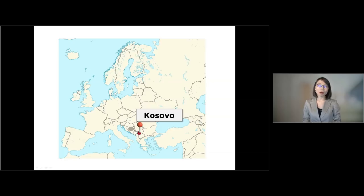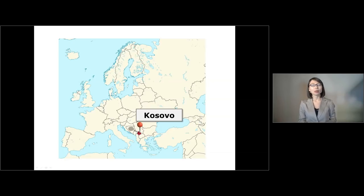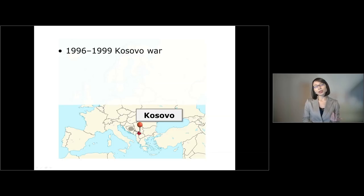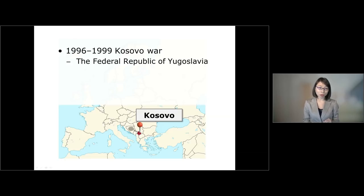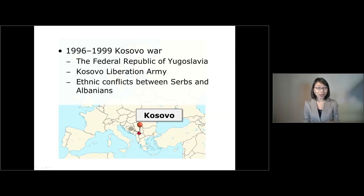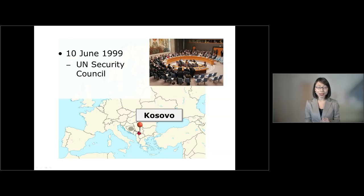Kosovo is a region in the Balkan Peninsula which has suffered from decades of ethnic conflict. From 1996 to 1999 there was an intensive armed conflict between the forces of the Federal Republic of Yugoslavia and the Kosovo Liberation Army, involving ethnic conflict between Serbs and Albanians. In order to respond to this crisis, the Security Council adopted in June 1999 Resolution 1244.